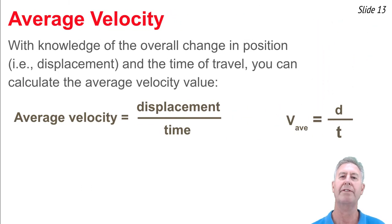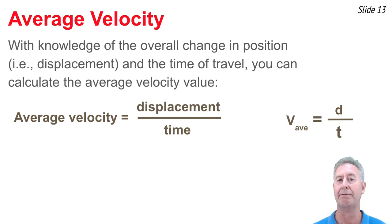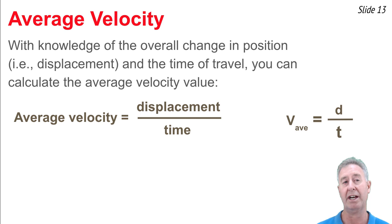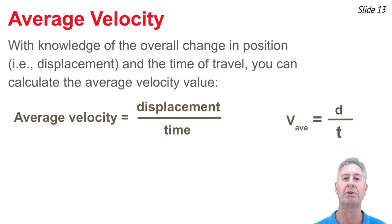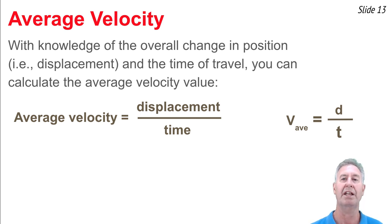Velocity is the rate at which position changes. So on average, to calculate the average velocity, we need to take an overall position change and divide it by the time change — in other words, take a displacement and divide it by the time of travel. The equation is: average velocity equals displacement divided by time. Using symbols: V-av equals displacement divided by T, where D stands for displacement and T is time.